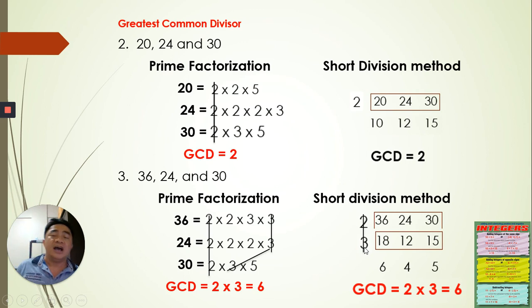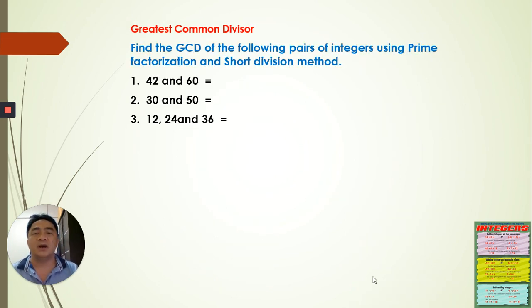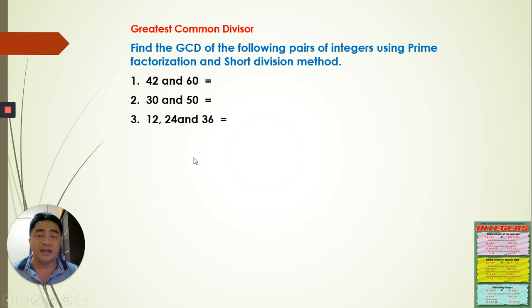That's how easy it is to find the GCF or GCD for certain numbers — by comparing and identifying the greatest common factor. We have here three additional numbers as an extra points activity. You copy these and answer in your yellow notebook using prime factorization and the short division method.